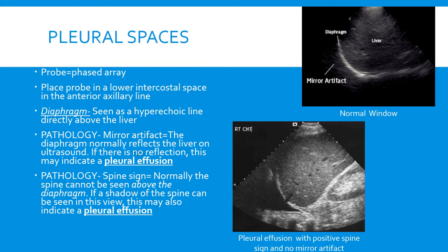If you don't see liver above the diaphragm, we could be worried about a pleural effusion, as in the picture on the bottom. Another way we can look for a pleural effusion is the spine sign. Normally you won't be able to see the spine above the diaphragm because that area is full of air, which scatters ultrasound waves making everything behind it fuzzy and black. But when there's fluid in that area, ultrasound waves can travel through it and you'll see the spine behind it — a positive spine sign. A lack of mirror artifact plus a positive spine sign strongly suggests a pleural effusion.